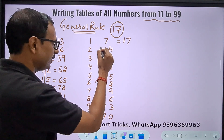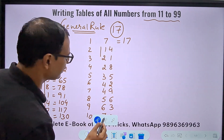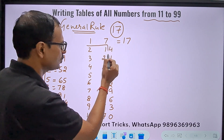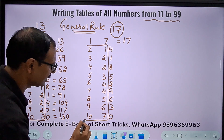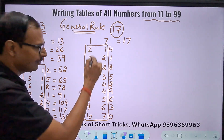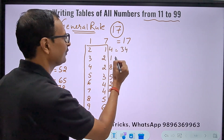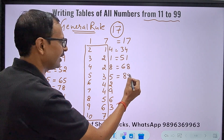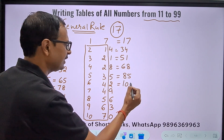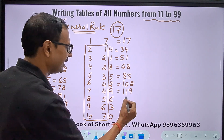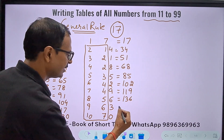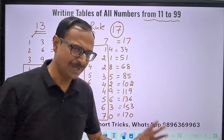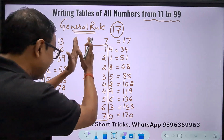Now we handle the double-digit entries. Separate and add: 2+1=3 and 4 → 34; 3+2=5 and 1 → 51; 4+2=6 and 8 → 68; 5+3=8 and 5 → 85; 6+4=10 and 2 → 102; 7+4=11 and 9 → 119; 8+5=13 and 6 → 136; 9+6=15 and 3 → 153; 10+7=17 and 0 → 170. That's the complete table of 17.